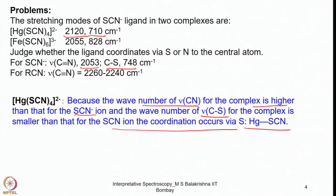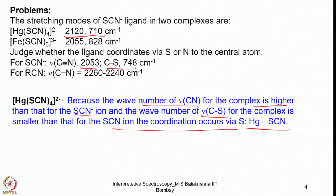In the case of the iron complex, the C≡N stretching frequency is much lower compared to free SCN, and on the other hand the C-S stretching frequency is much larger compared to the free ligand. That indicates that in the case of iron, N is coordinating to the Fe³⁺ center — i.e., NCS (N-bound) coordination.